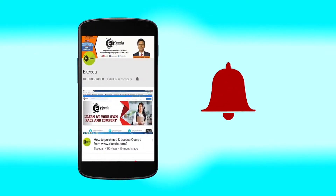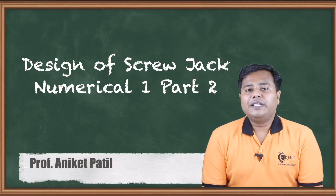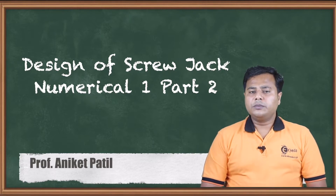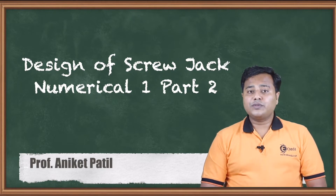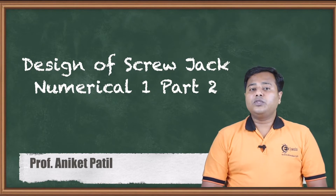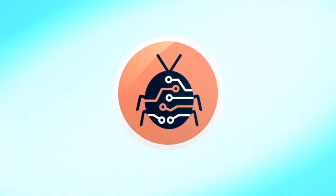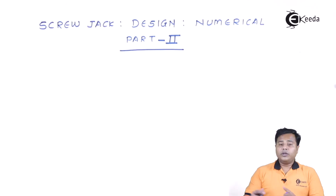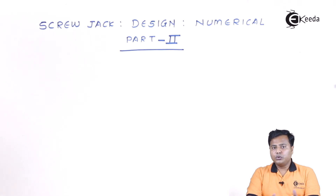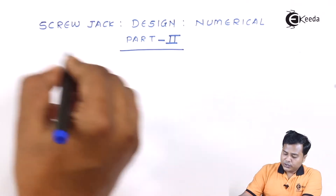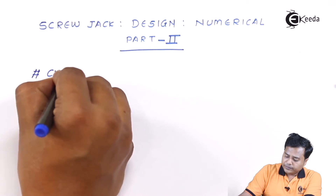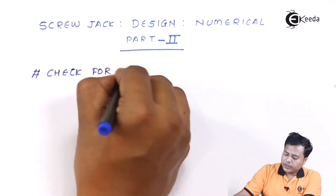Welcome to the subject of Machine Design. We are looking at the design numerical of a screw jack. In the last section we designed a few parameters of the screw, and in today's session we are going to see whether those parameters are safe or not. We already have a standard selection for the screw — outer diameter, core diameter, mean diameter, pitch, etc. The first thing we are going to do is check for combined stresses.